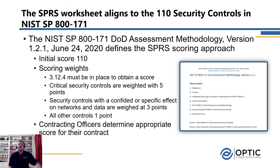Now that we have an understanding of the DFARS rule and SPRS itself, let's talk about the worksheet. The worksheet is derived from the 110 security controls in SP 800-171, and from the scoring methodology that DoD published in June of 2020. We know that all organizations start with a score of 110, and then points are deducted for security controls that are not implemented. How many points are deducted depends on the security control itself and the weight that DoD has assigned to that control.